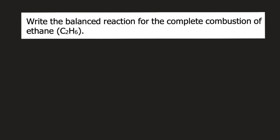Write the balanced reaction for the complete combustion of ethane, or C2H6. Ethane is an example of what we call a hydrocarbon. Hydrocarbons are compounds composed of only two elements: hydrogen and carbon. The problem says the hydrocarbon undergoes combustion. Combustion is a reaction with oxygen gas, so the hydrocarbon reacts with oxygen gas.